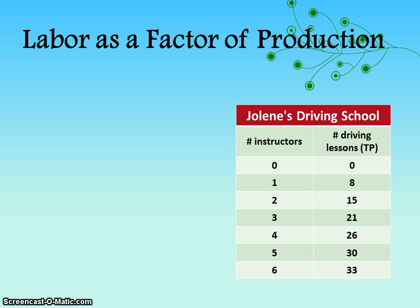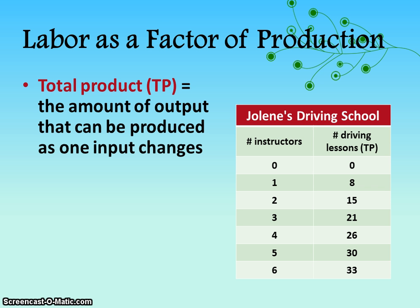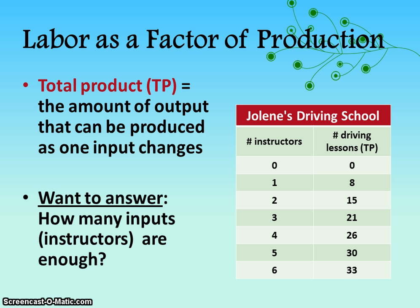We did learn a little bit about production and the law of diminishing marginal returns earlier in the course, so some of this is review. We're going to take it one step farther today. The example we'll be using is Jolene's Driving School. The table shows total product — how many lessons can be taught depending on the number of instructors on staff. Total product is the amount of output that can be produced as one input changes. When there are five workers at Jolene's Driving School, they can do 30 lessons per week. The question we hope to answer is: what's the optimal number of instructors for Jolene to hire?